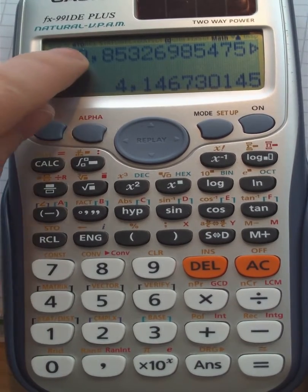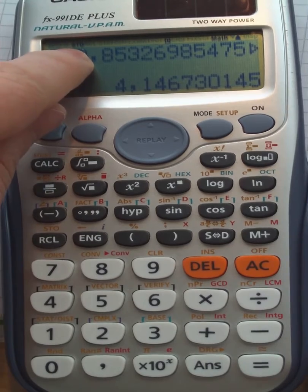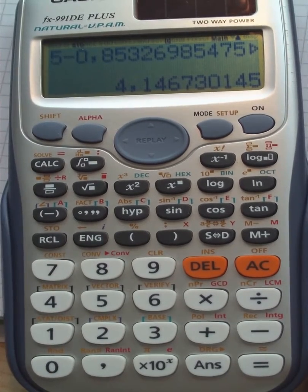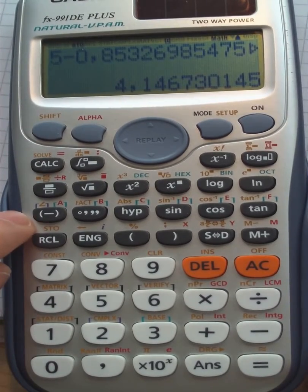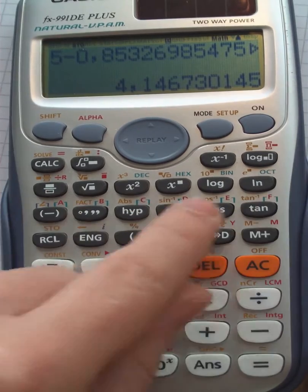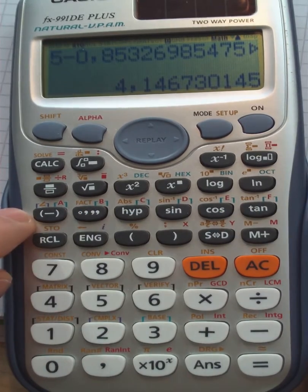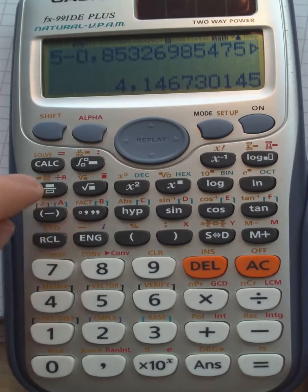You see that it is indicated on the screen with a small STO. Now choose a letter from A to F for a place to store this number. I choose in this case A.